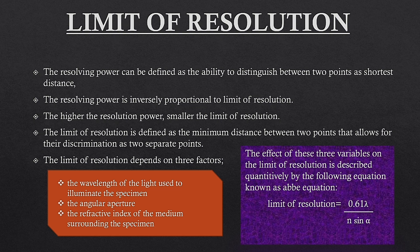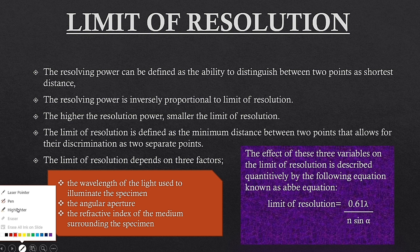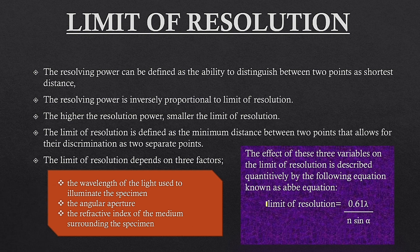The Abbe equation states that the limit of resolution (d) is equal to 0.61 times lambda divided by n times sin alpha, where lambda is the wavelength of light, n is the refractive index, and alpha is the angular aperture.